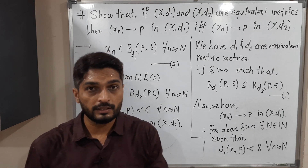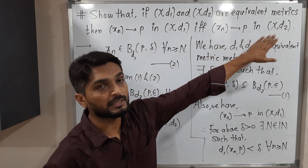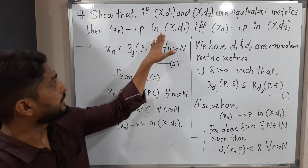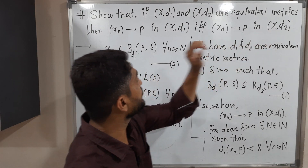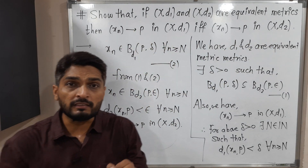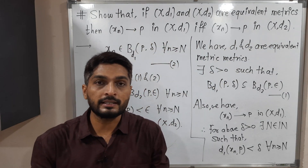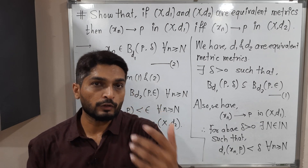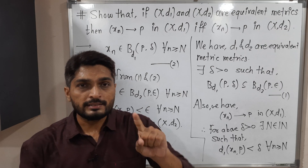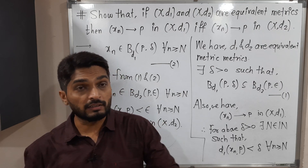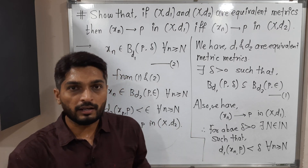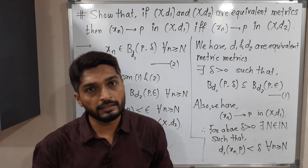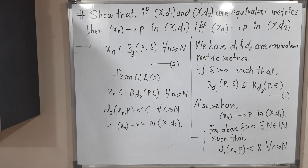Now we have to prove in reverse: assume xn converges to P in (X, D2) and prove xn converges to P in (X, D1). The second part is very similar. I am giving this second part as an exercise for you — you can try on your own. Simply replace D1 by D2 and D2 by D1 everywhere, and you will get that proof automatically. Try for that second half, and if you have any difficulty then write to me. Thank you, see you.